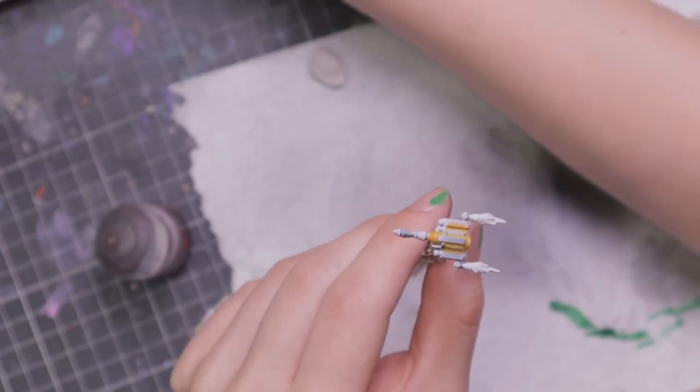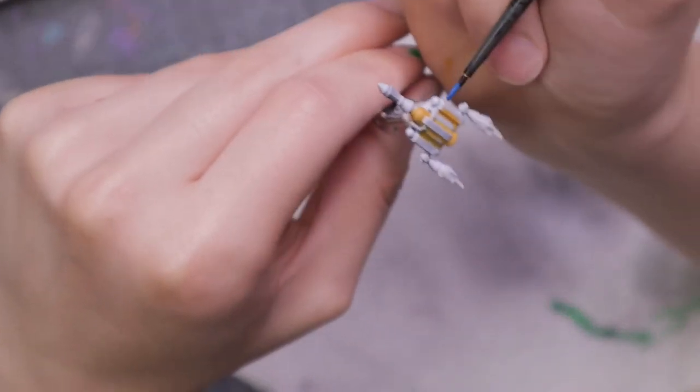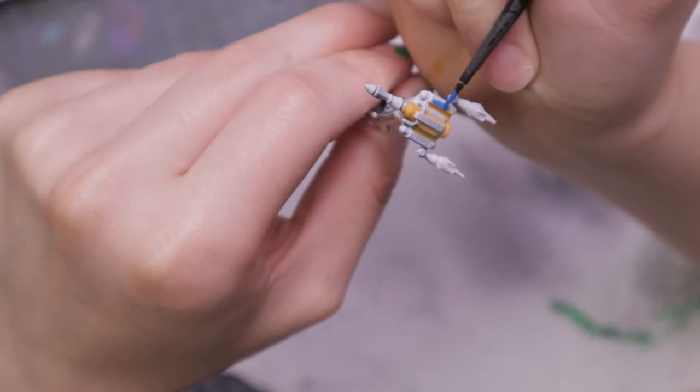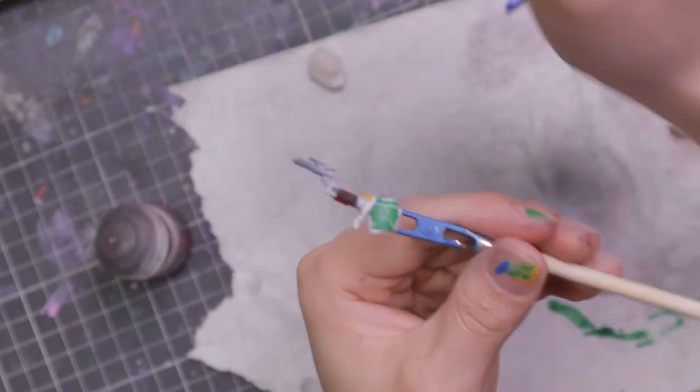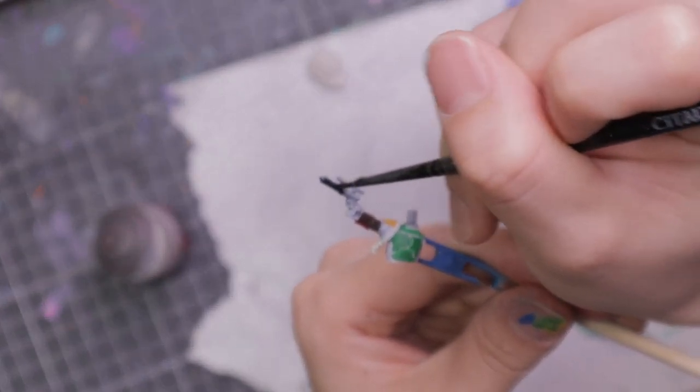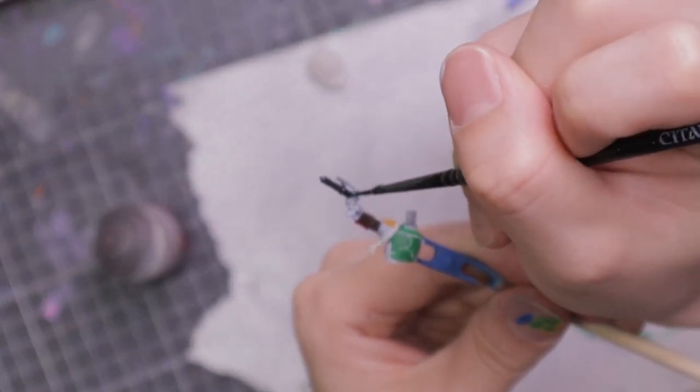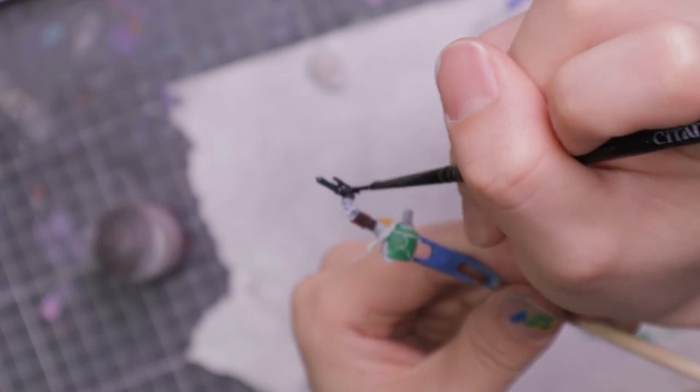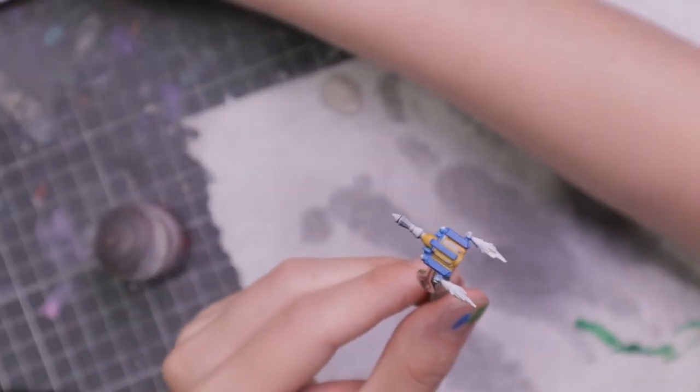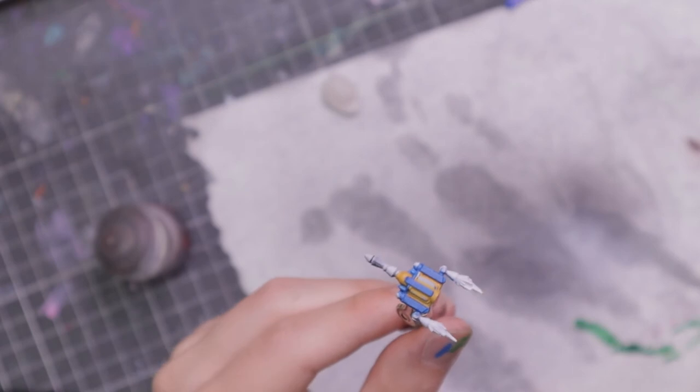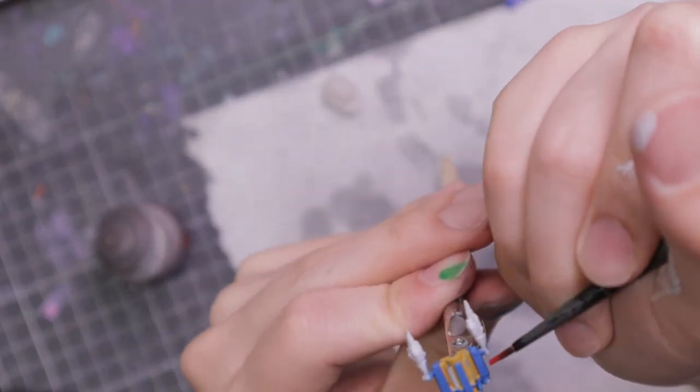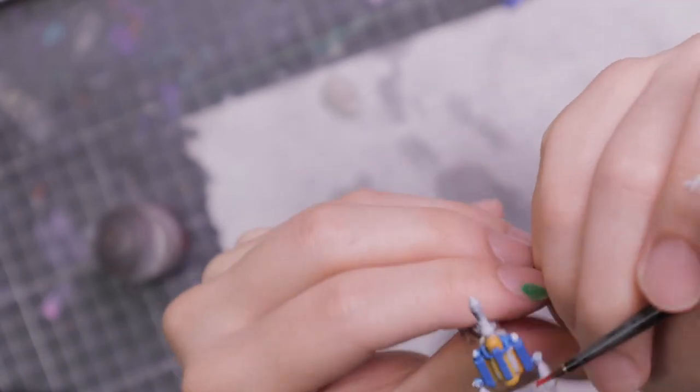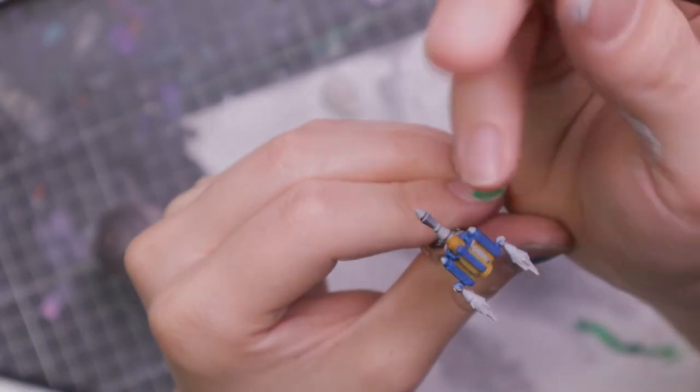Now I've got to do blue for the backpack. Now I'm going to do some black for the gun itself. Next are some red accents on the jump pack. Let's see if I can get in there without ruining anything.